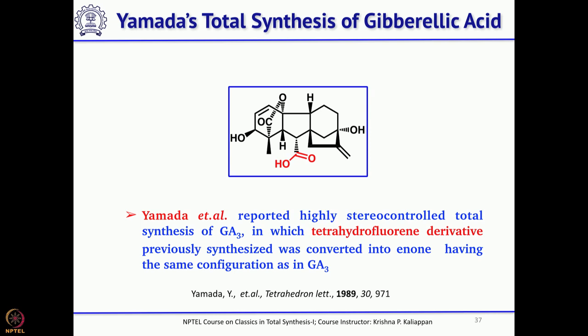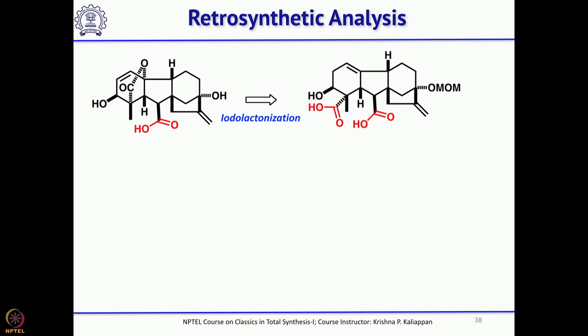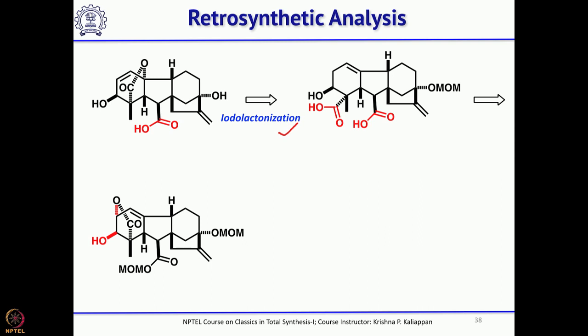Now we move to the second total synthesis reported by Yamada on the same molecule and what key reactions he used. Once you have a lactone, one common reaction is iodolactonization. He again used iodolactonization as the first key disconnection to get gibberellic acid, then wanted to cleave a bond. If you have an allylic ester or allylic carbonate, one can cleave it under palladium catalyst conditions or metal-ammonia conditions to get the corresponding double bond.